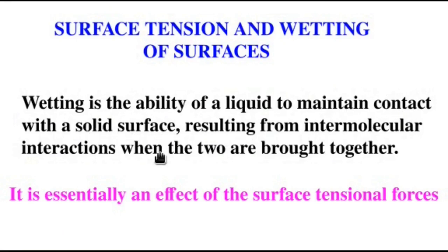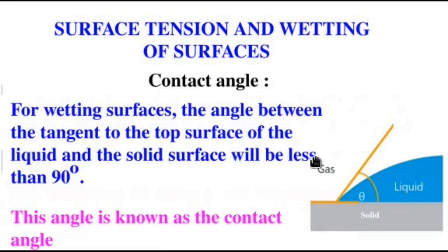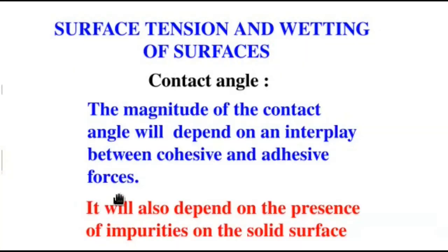Now, wetting is nothing but the ability of a liquid to maintain contact with a solid surface, resulting from intermolecular interactions when the two are brought together. So, it is essentially the end effect of the surface tension forces. If you observe closely the water sticking to the steel plate for example, you can see that the top surface of the drops has a convex shape. That means the angle between the tangent to the top surface of the liquid and the solid surface will be less than 90 degrees. Now, it is this angle which is known as the contact angle. The magnitude of the contact angle will depend on an interplay between the cohesive and adhesive forces. It will also depend on the presence of impurities on the solid surface.